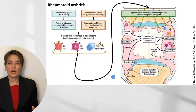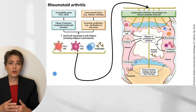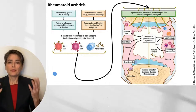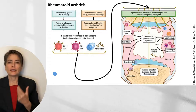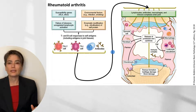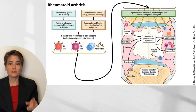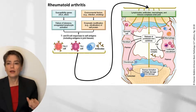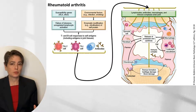In rheumatoid arthritis, susceptibility genes, failure of tolerance, and environmental factors together generate Th17 and Th1 cells as well as antibodies. When these cells and antibodies enter the joint, there is release of proteases and cytokines, as well as deposition of immune complexes — type 3 — combined with Th1 and Th17 activity — type 4. All of this together results in joint injury, pannus formation, cartilage damage, and bone damage seen in rheumatoid arthritis.